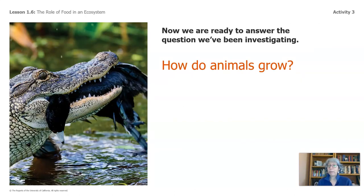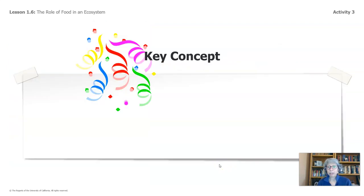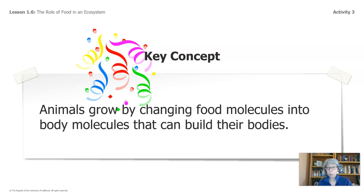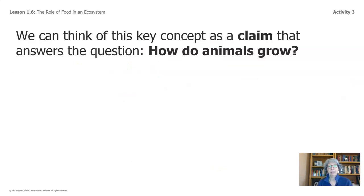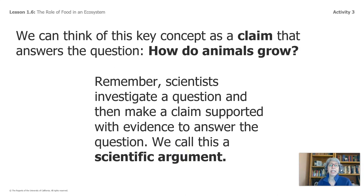Now we're ready to answer the question we've been investigating: How do animals grow? We've been looking at this for a couple of videos. Are you ready to answer this question? Get ready, because it's a key concept. Animals grow by changing food molecules into body molecules that build their bodies. We can think of this key concept as a claim that answers the question, how do animals grow? Scientists investigate a question and then they make a claim supported with evidence to answer that question. We call this a scientific argument — it's the best idea.